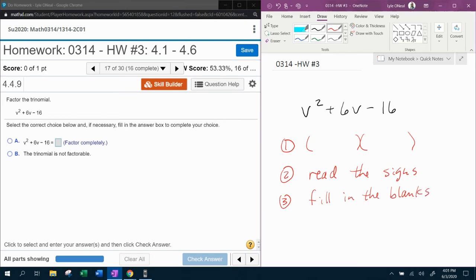First ingredient, you're going to start with two sets of parentheses. And then you're going to need to read the signs. The way that you read the signs is you look at the last sign first. If this is minus, then these are going to be different. Minus at the back makes these different.